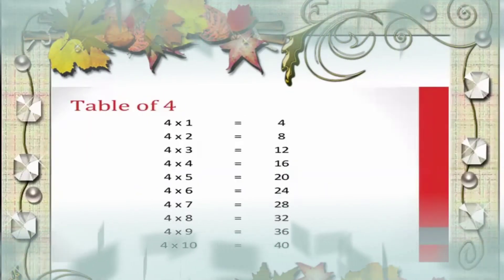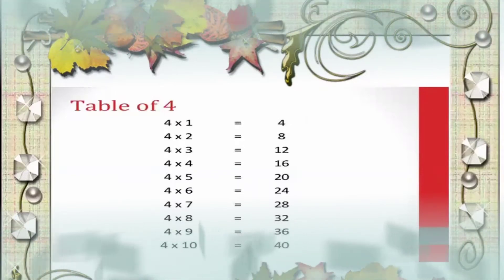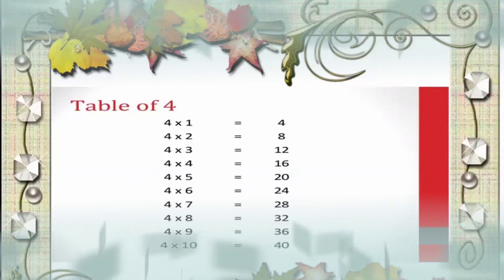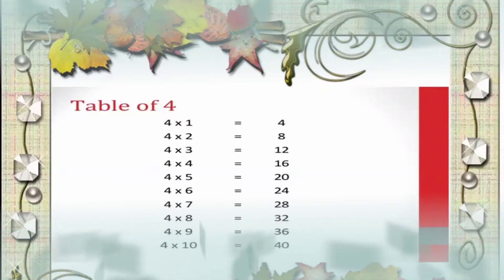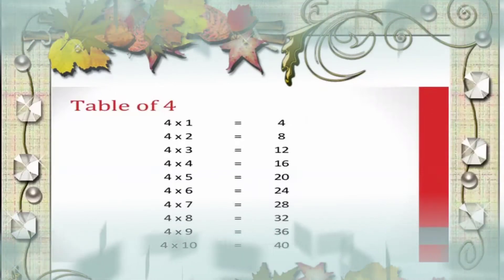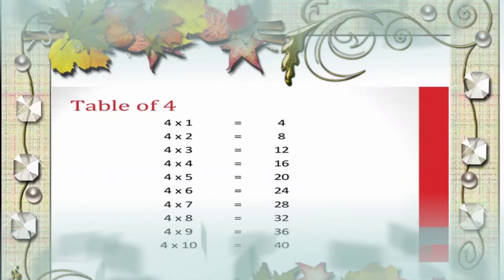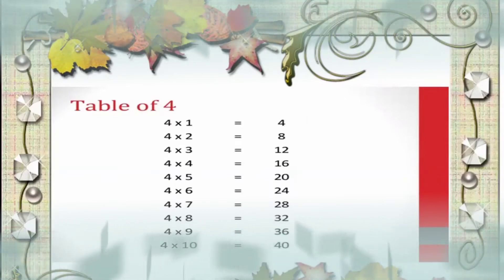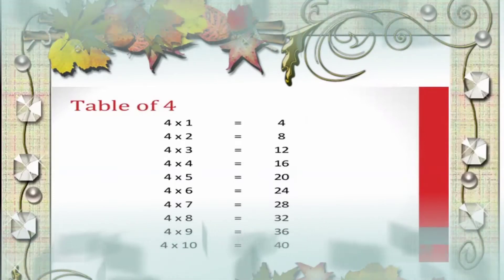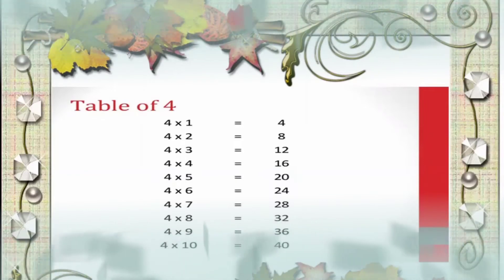Now the table of 4. 4 1's are 4, 4 2's are 8, 4 3's are 12, 4 4's are 16, 4 5's are 20, 4 6's are 24, 4 7's are 28, 4 8's are 32, 4 9's are 36.